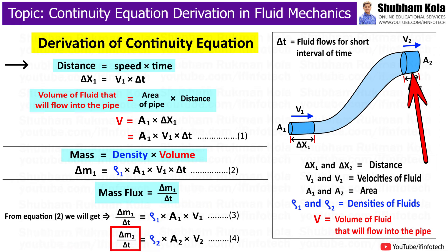Similarly, mass flux at upper end of the pipe, which is delta m2 upon delta t, will be equal to rho 2 times A2 V2. Here, V2 is velocity of fluid flowing in upper end of the pipe, and delta t is time. A2 is area of cross-section of upper end of the pipe.